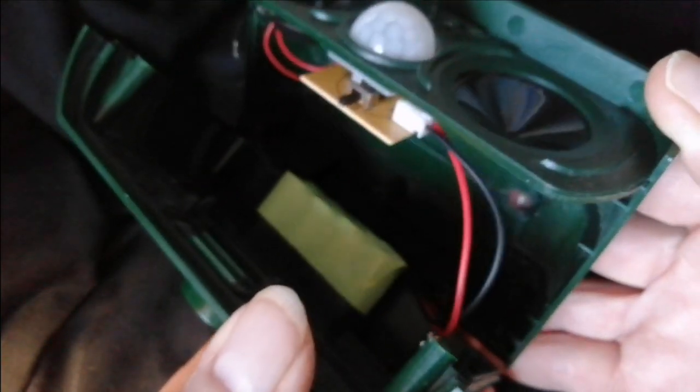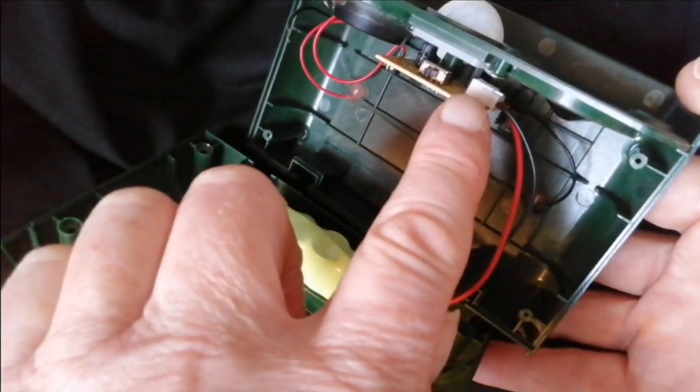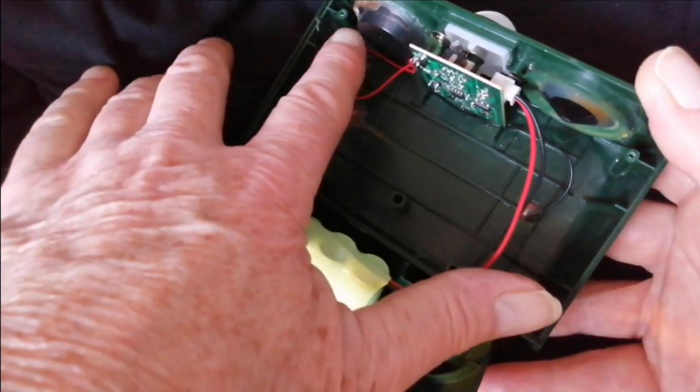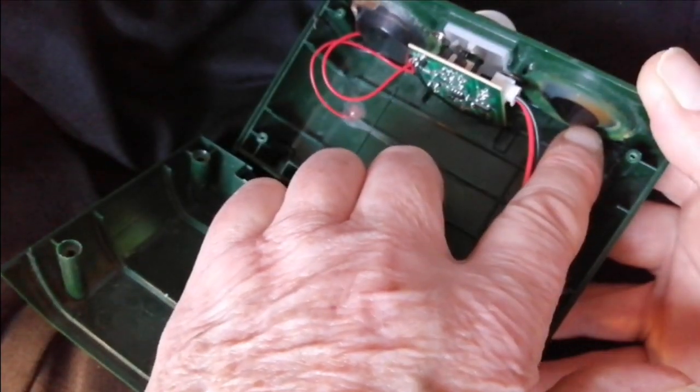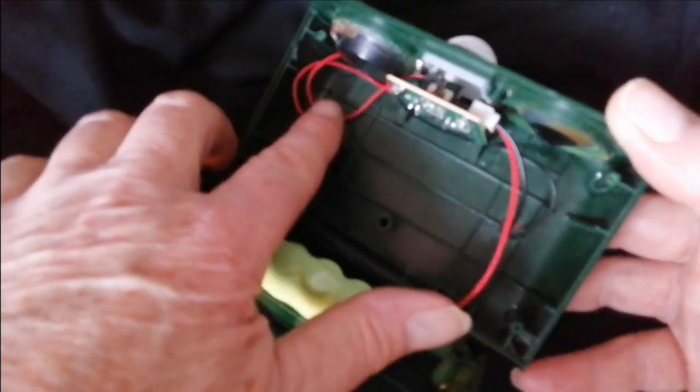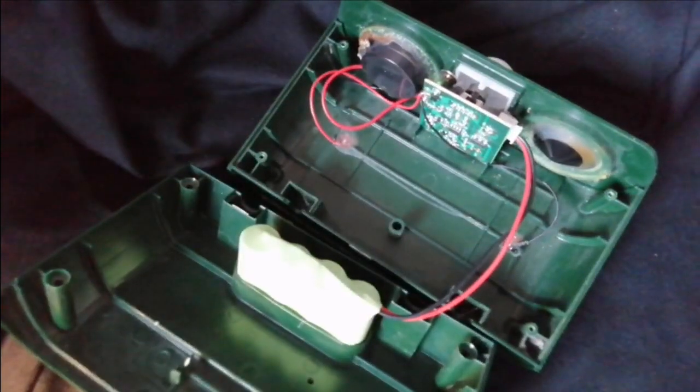Now inside there's a battery pack, a circuit board, and only one transducer. See that's a dummy. This is a con. It actually is advertised as having two ultrasonic transducers, but there's only one.